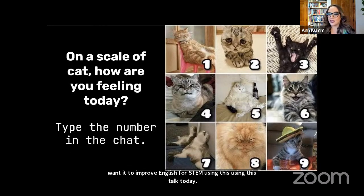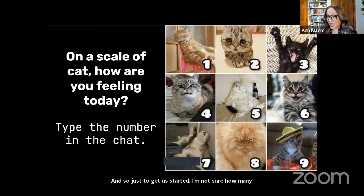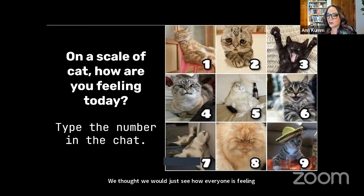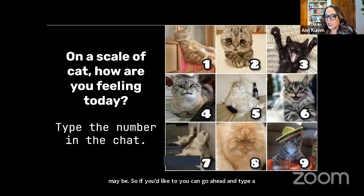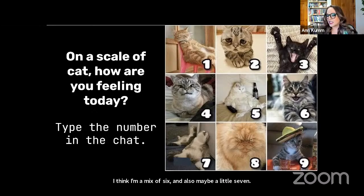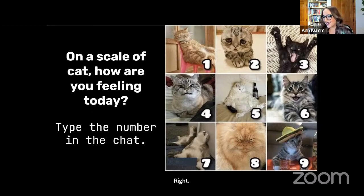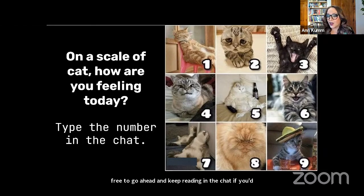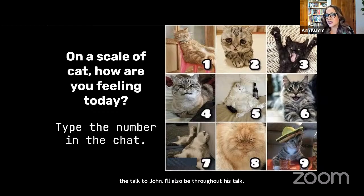Just to get us started, on a scale of CAT, we thought we'd see how everyone is feeling today. You can type a number in the chat. John says he is six; I think I'm a mix of six and maybe a little seven. Feel free to keep writing in the chat, but I'm going to pass off the talk to John. I'll also be writing additional information in the chat, sharing terms or links that are relevant and helpful. Without further ado, here's John.